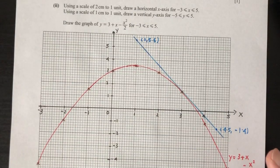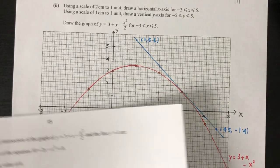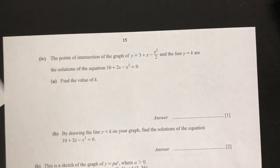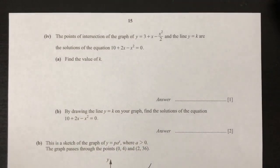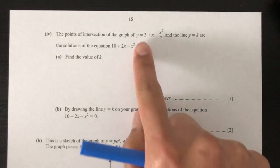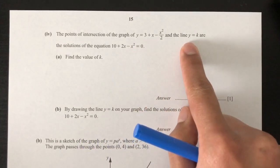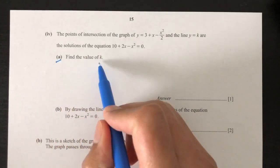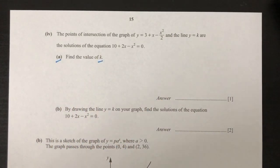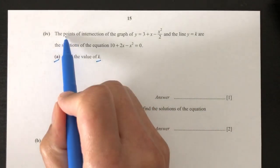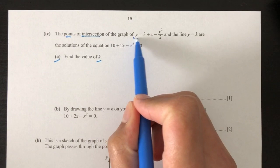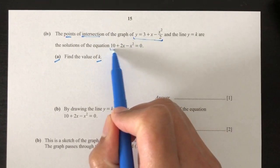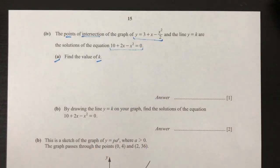Now let's move on to part 4 of the question. The points of intersection of the graph of y and a line are given, and we have to find the value of k. The trick here is: whenever you have this kind of question involving points of intersection and two equations, you have to solve them simultaneously.